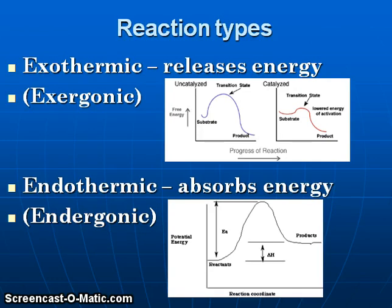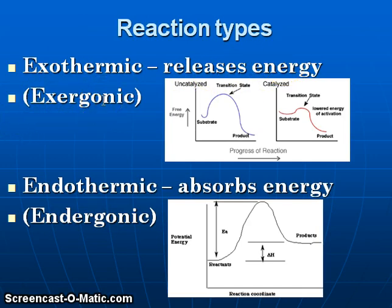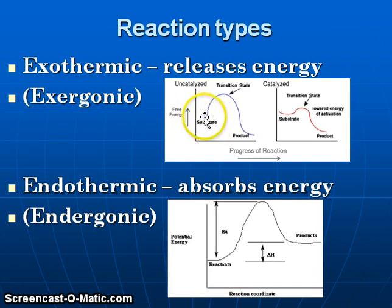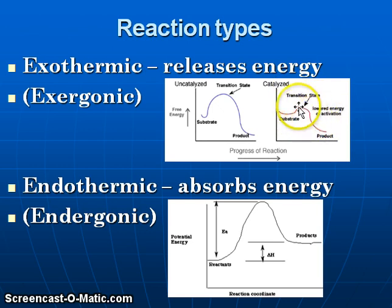This slide shows two different reaction types. Exothermic reactions are those that release heat energy — we can also call these exergonic to refer to any type of energy being released. Endothermic reactions are ones that will absorb energy, also referred to as endergonic. In a diagram illustrating an exothermic or exergonic reaction, the reactants — the substrate — have a higher energy level than the products. An enzyme could help to catalyze the reaction and lower the activation energy.